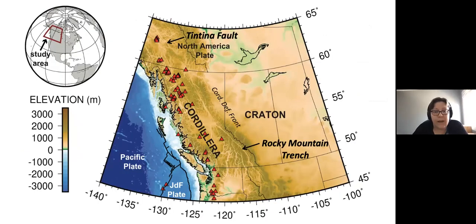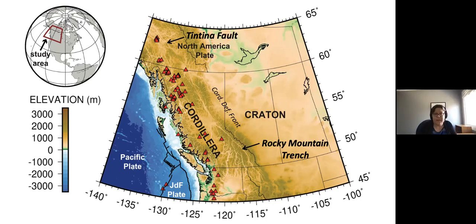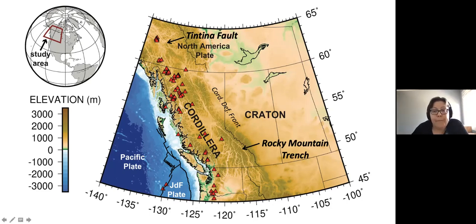This is the topography for Western Canada, showing that this region is really characterized by two distinct areas of topography. On the west, we have the high elevation Cordilleran region, which we can see very clearly in the topographic map. And to the east, we have the low-lying Craton. We have the Craton in the east, which is very low elevation and low relief. The boundary between these two areas, in terms of the topography, is the Cordillera deformation front, which we can see clearly by the transition here.